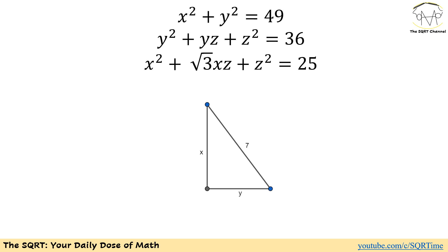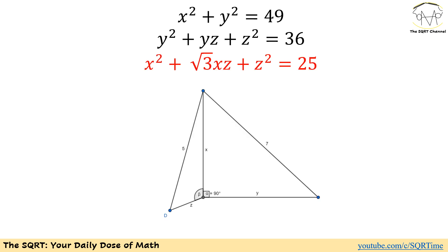Now let's focus on the third expression: x² + z² + √3·xz = 25. We write 25 as 5², and construct a triangle with x and z as the sides and β as the angle between them. We need to figure out what value β takes.